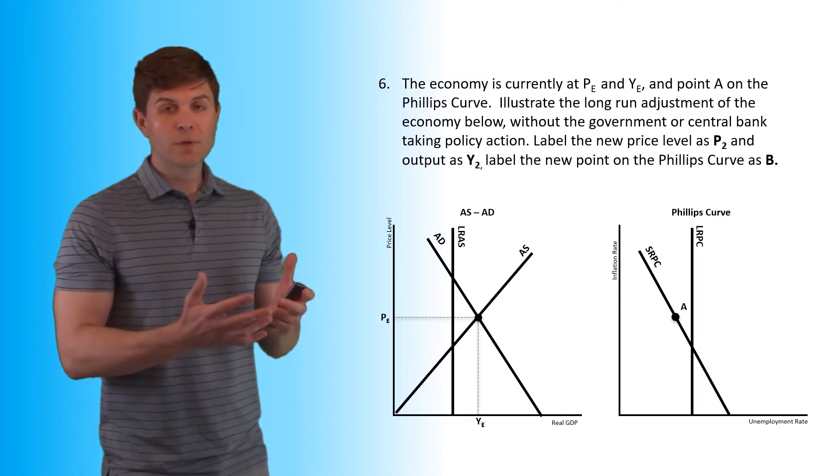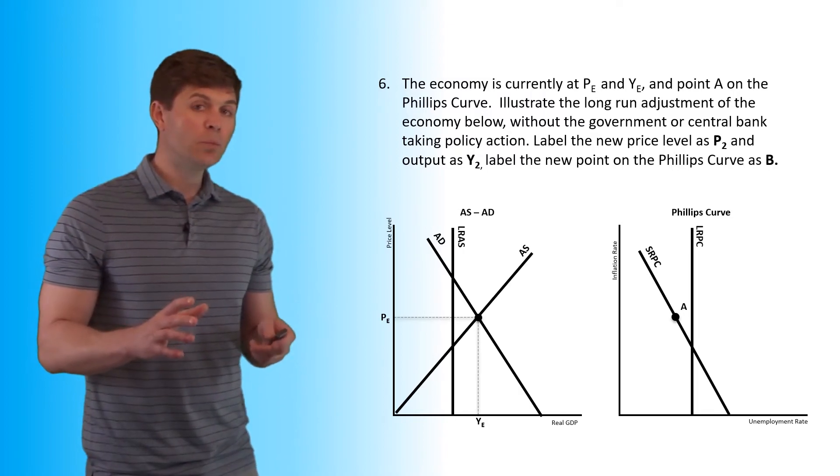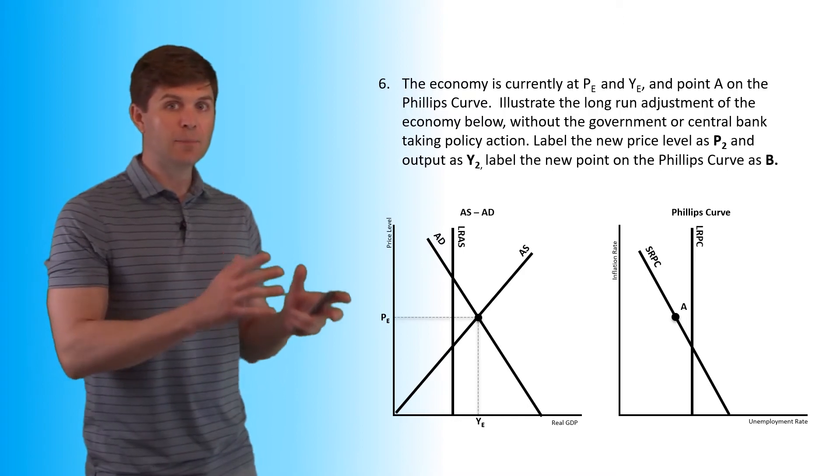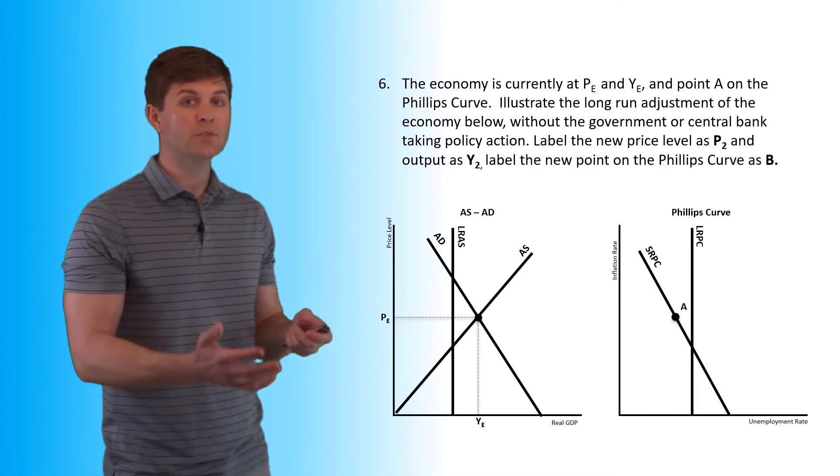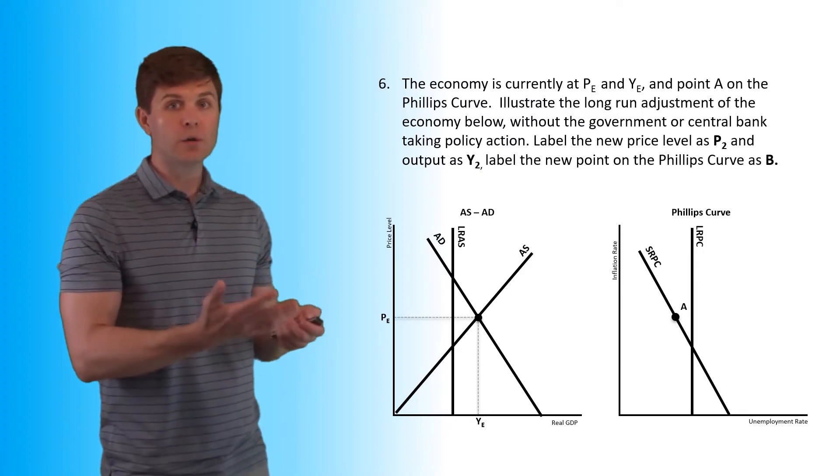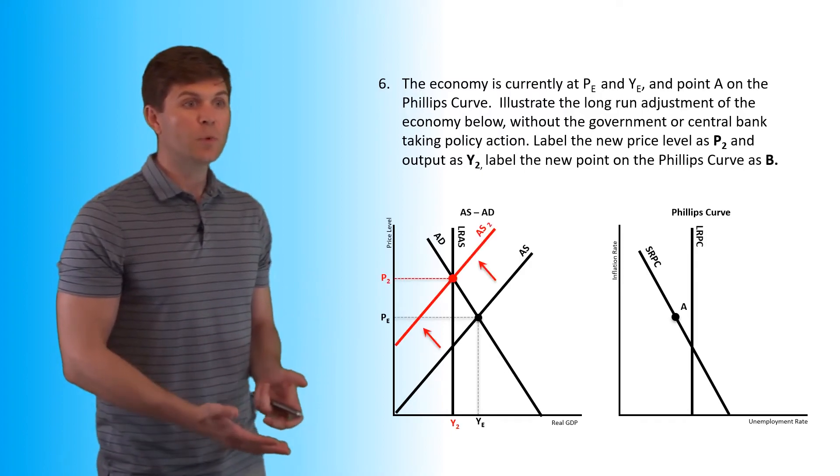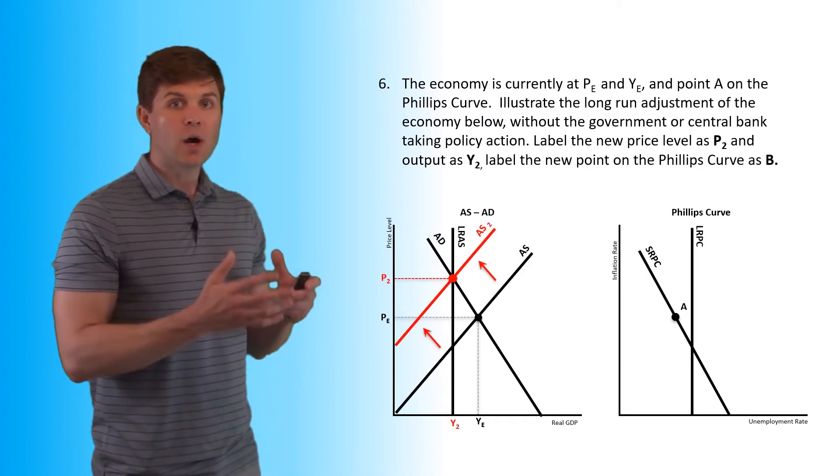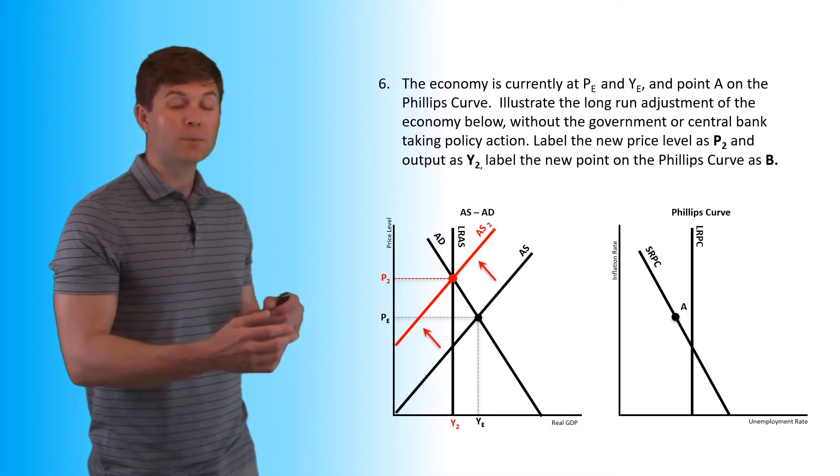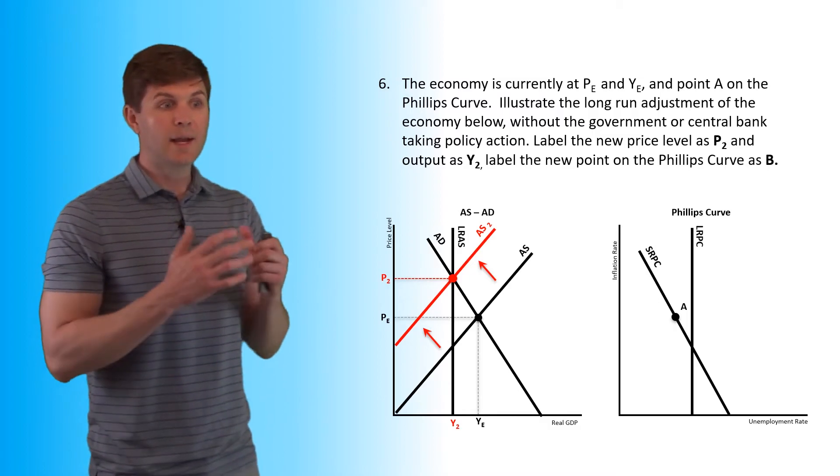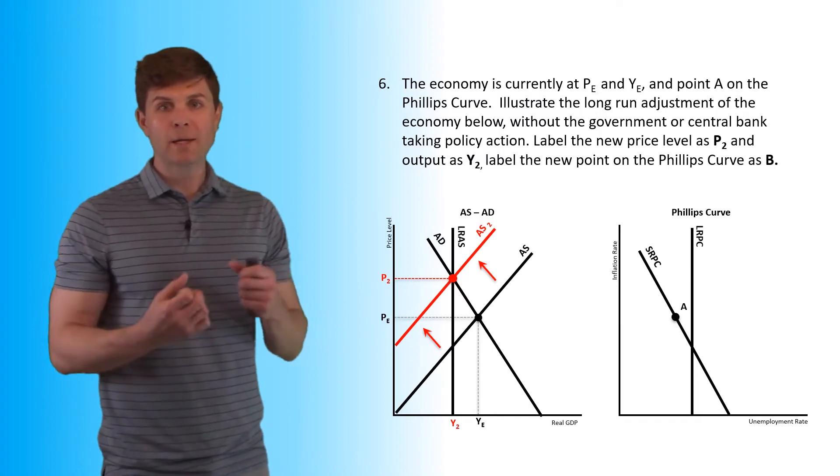Prices are going to be increasing. Now wages will be sticky to begin with, but eventually as time goes on, as the long run adjustment takes place and those wages start to go up a little bit, the cost of production goes up as well. So we see that increasing cost of production causing the aggregate supply curve to shift to the left, that higher price level, but back to potential GDP.